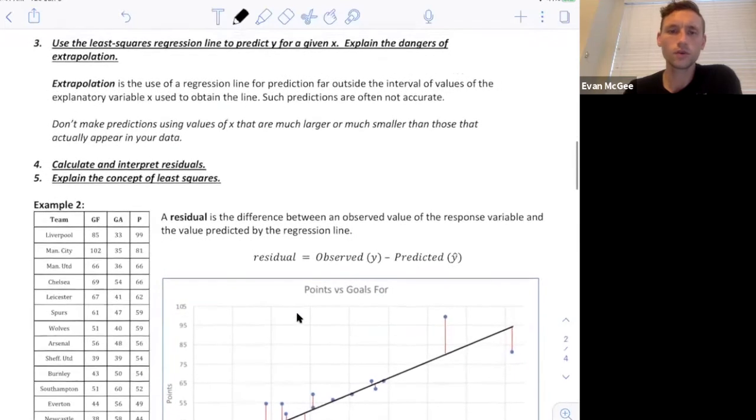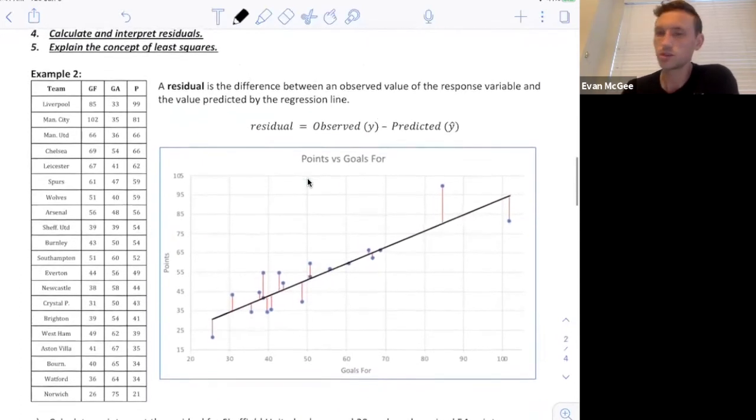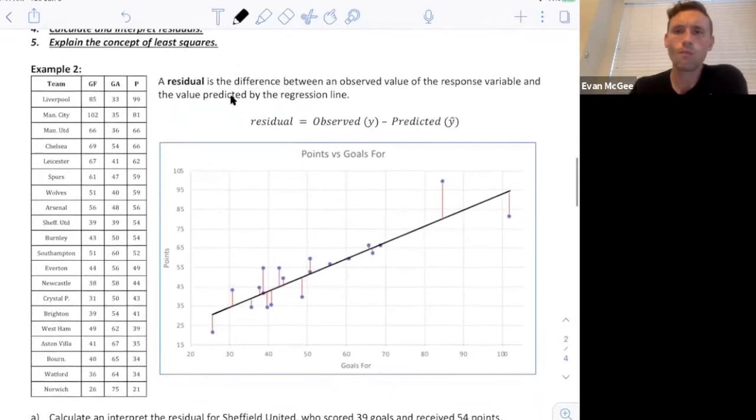For the third and fourth standard, calculate and interpret a residual and explain the concept of least squares. A residual is the difference between an observed value and the predicted value. A residual is observed or y minus the predicted y hat.